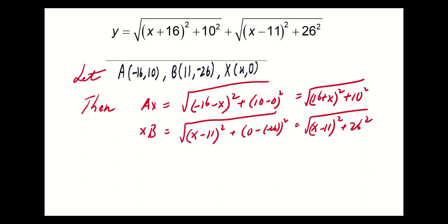By triangle inequality, we know that AX + XB is at least equal to AB.